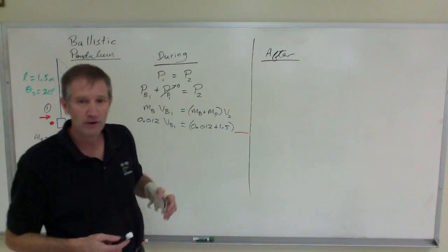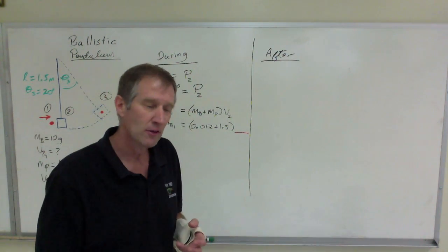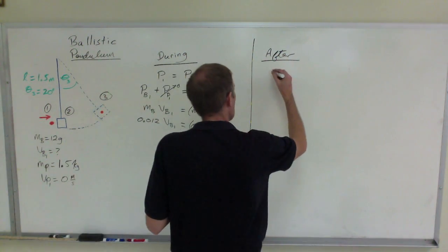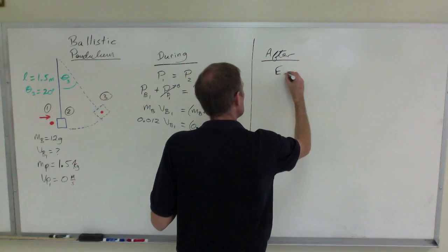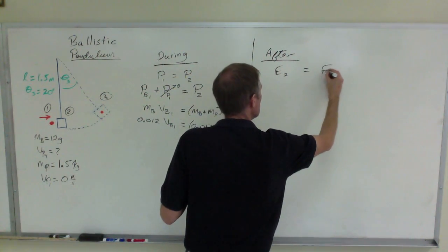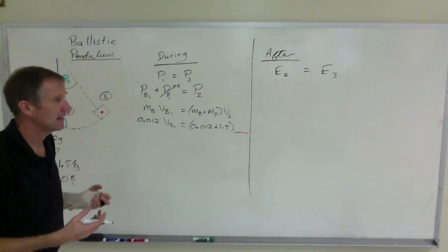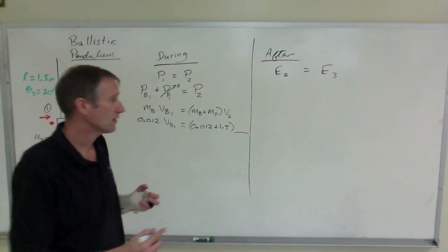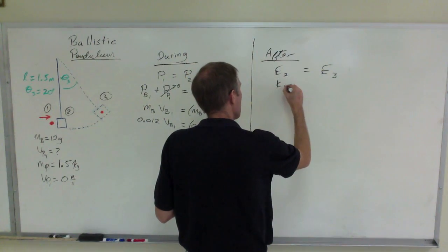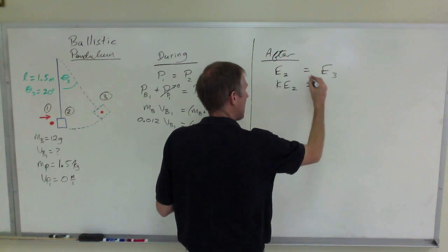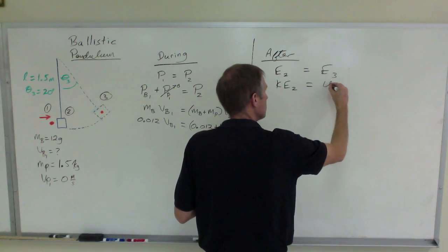That's what I'm going to do over here, conservation of energy after the collision. So E2 equals E3. The energy down here equals the energy there. The energy again at the bottom is all kinetic. The energy at the highest point is all potential.